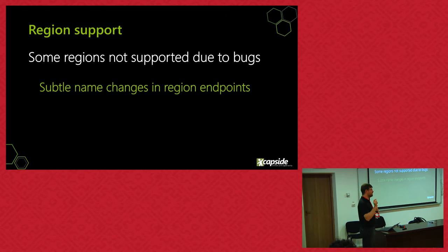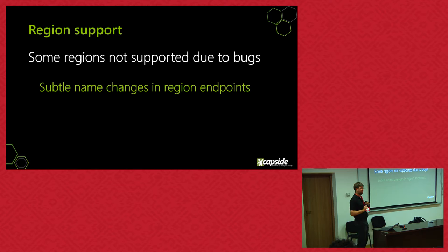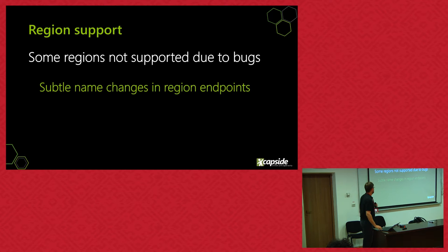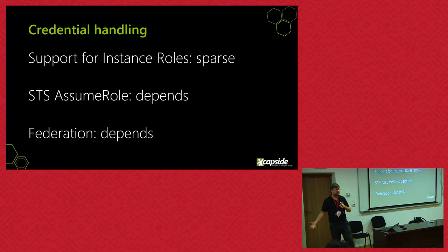Once you get into using various regions, you find subtle bugs in some modules that wouldn't support some regions because of name changes in the DNS name. When you try to provision something in China, lots of modules won't form the name correctly, so you can't consume services in China. I would expect Perl to have broad support for all regions.